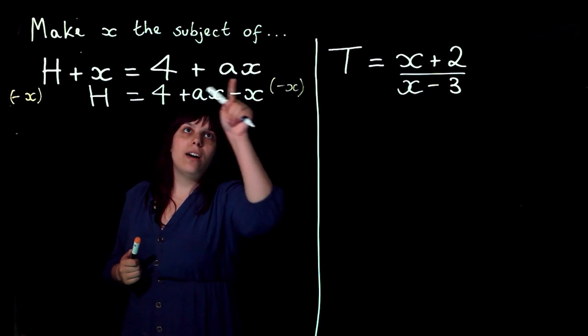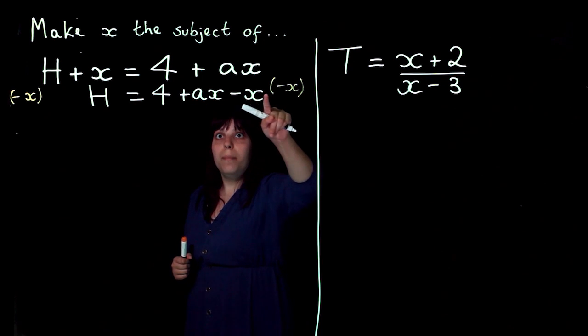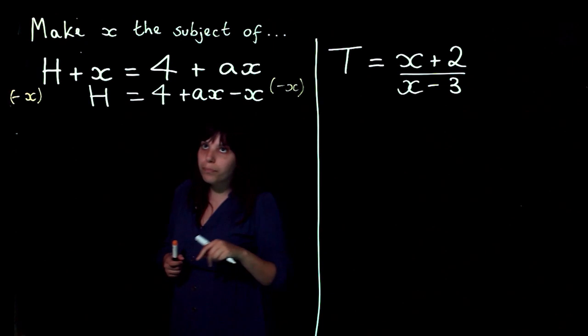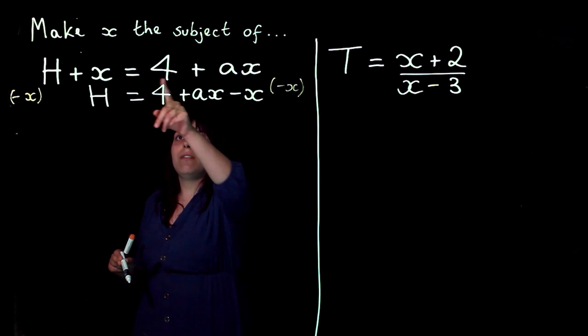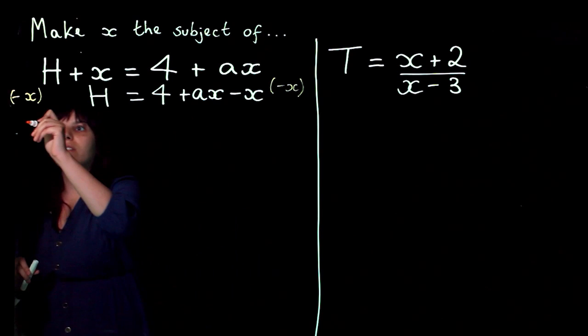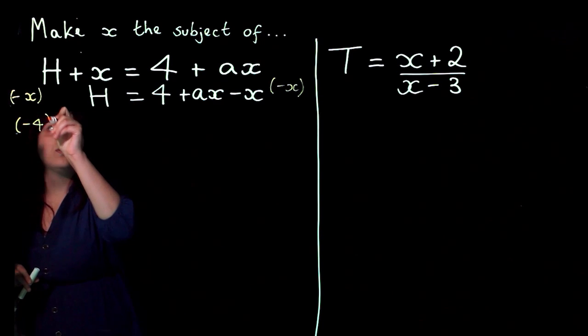So I end up with h on this side equals 4 plus ax minus x. And of course, I can't do anything with these at the moment. I can't collect them because one of them's an ax and the other one's an x. Now I'm going to get rid of this 4. I'm going to subtract 4 from both sides to get rid of it.